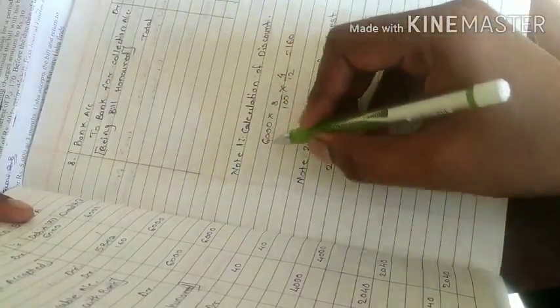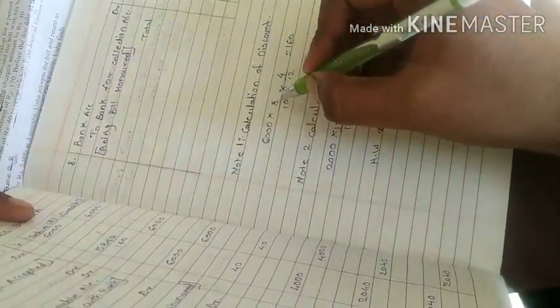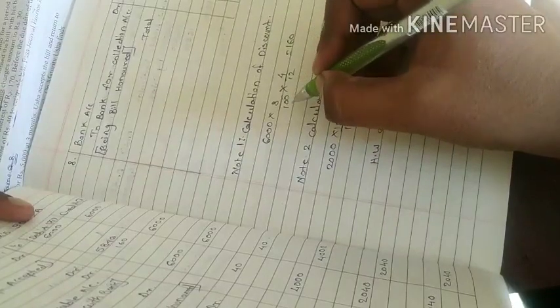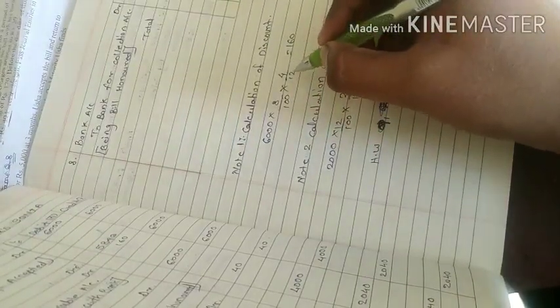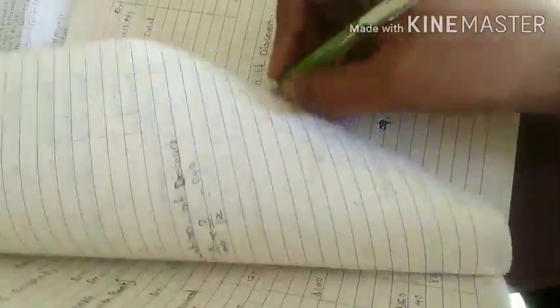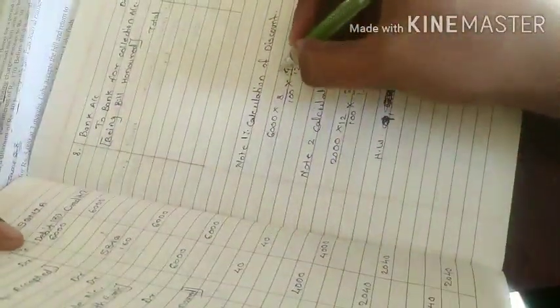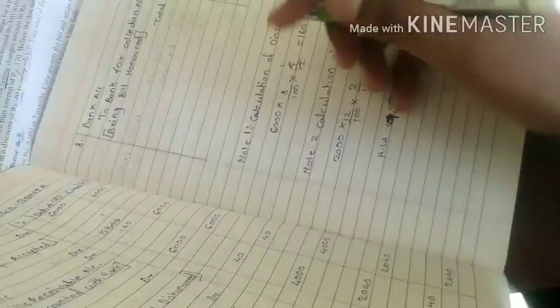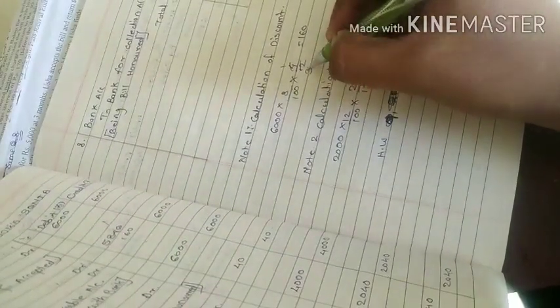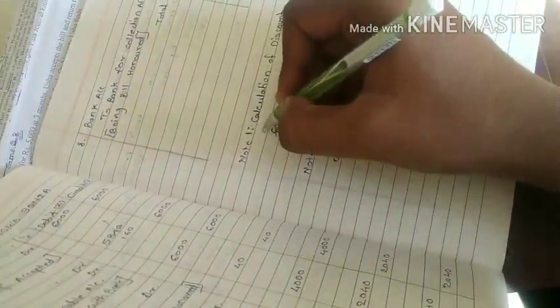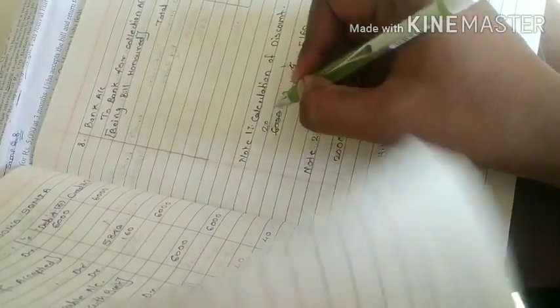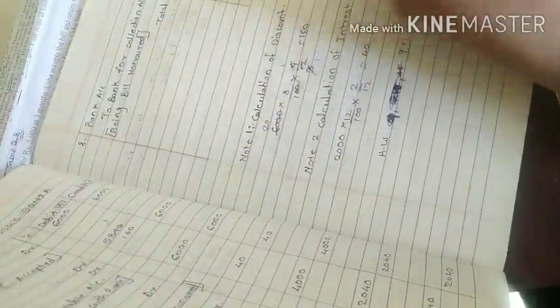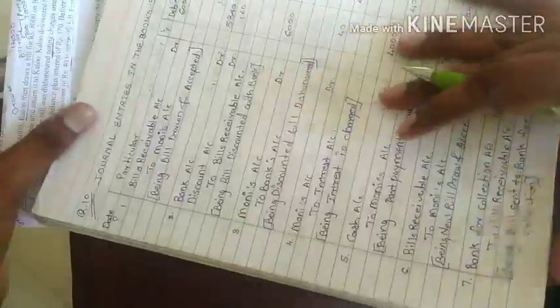Note number 1, calculation of discount: 6,000 into 8%, 8 upon 100, into how many months, bill 4 months, so 4 upon 12. So look, 4 ones, 4 threes, 3 ones, 3 twos, 2 zeros cut, 20 into 8 is 160. So how much discounted, 160.